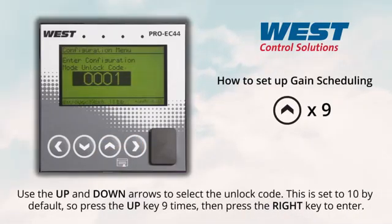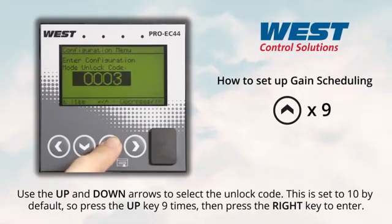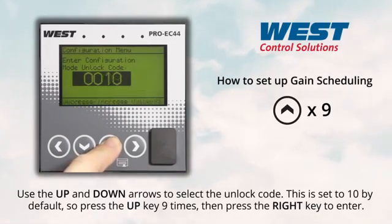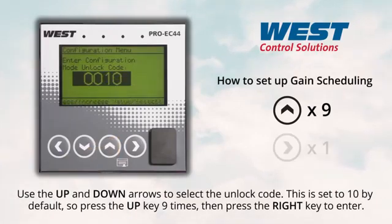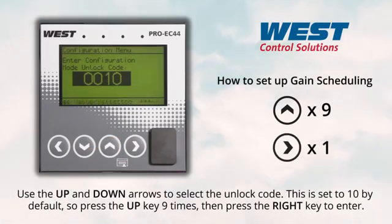Use the up and down arrows to select the unlock code. This is set to ten by default, so we'll press the up key nine times, then press the right key to enter.